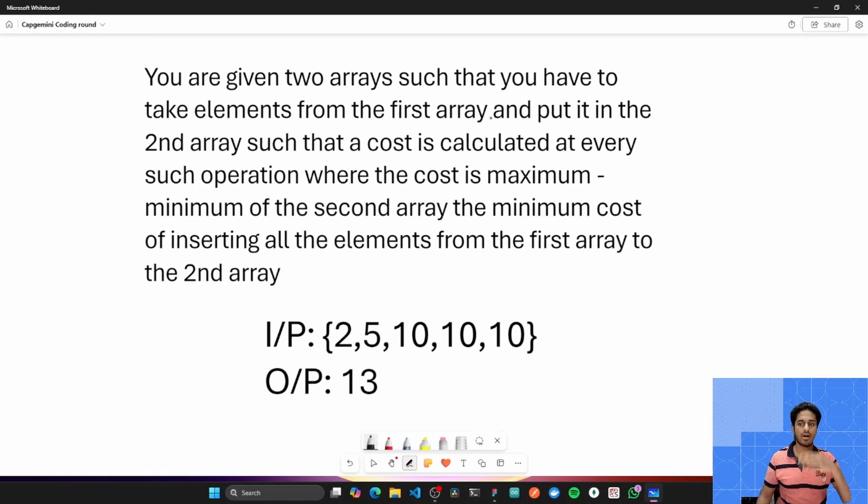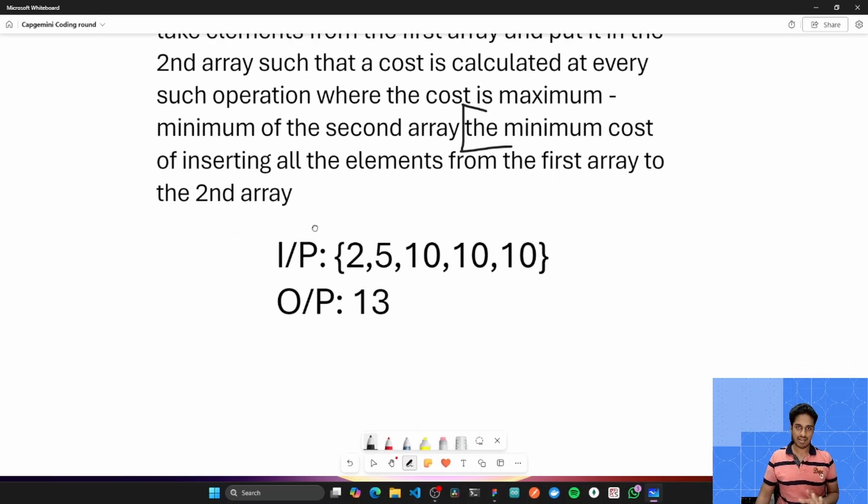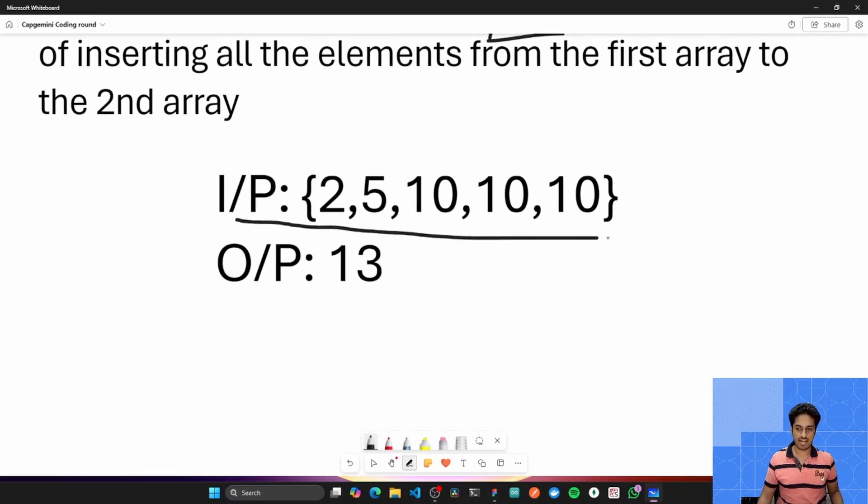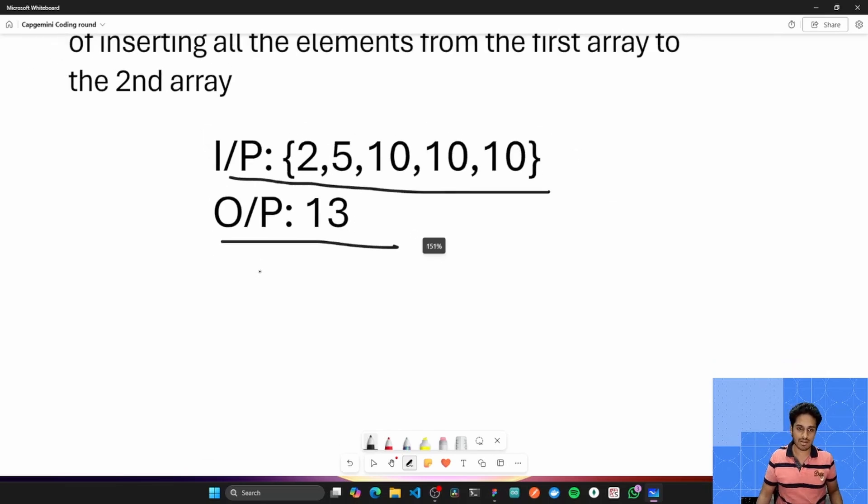You are given two arrays such that you have to take elements from the first array and put it in the second array, such that the cost is calculated at every such operation, where the cost is maximum minus minimum of the second array. You are supposed to give the minimum cost of inserting all the elements from the first array to the second array. Let's understand this with the help of example. Consider this input array: 2, 5, 10, 10, 10. For this, you are supposed to give output 13. Now you will ask me how do you calculate this 13.